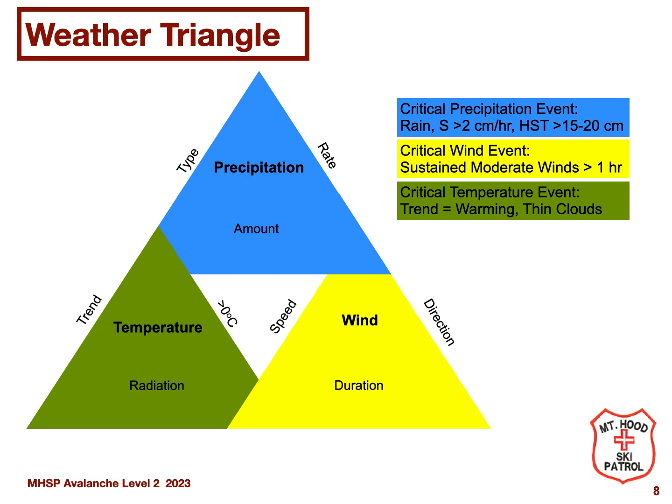For precipitation, the key parameters are type (rain or snow), rate, and amount. For temperature: the trend — is the temperature increasing or decreasing? — whether it is above or below freezing, and radiation effects. For wind: duration, speed, and direction. These parameters will help us answer the key question regarding weather.